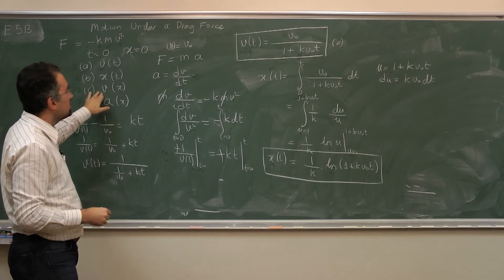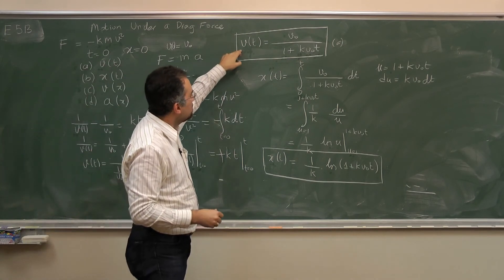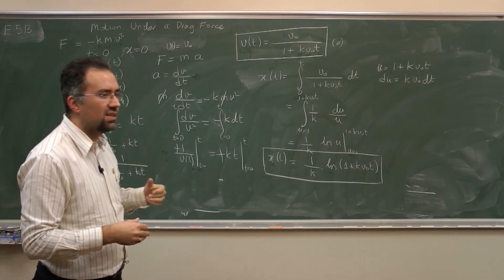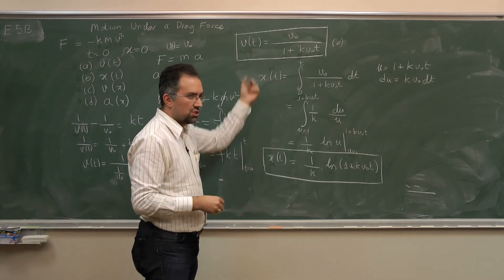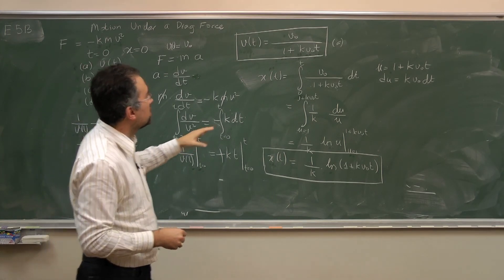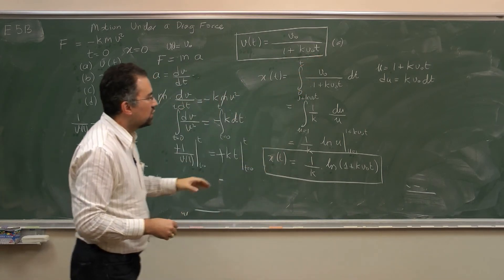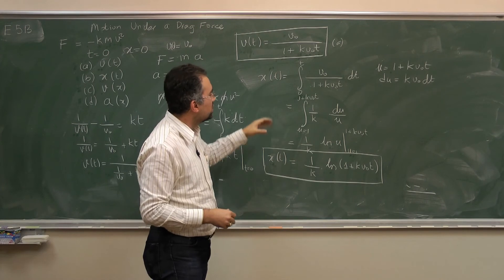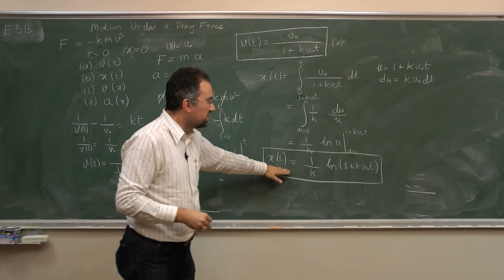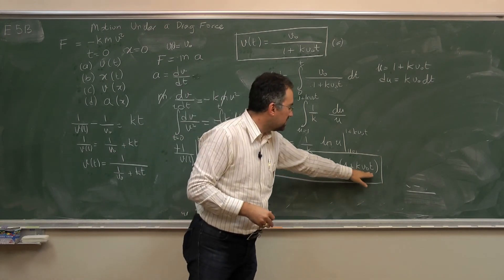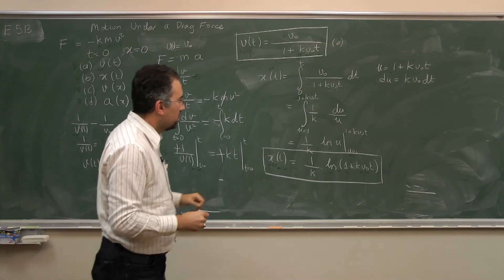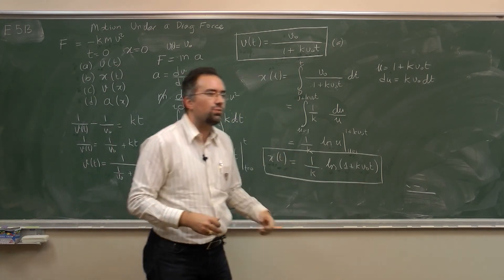Now part c asks us to find the speed as a function of position. So I need to eliminate time between these two equations. Now the reoccurring expression is 1 plus k v0 t. So if I just take that from one equation and plug it into the other one, then I'll be happy.